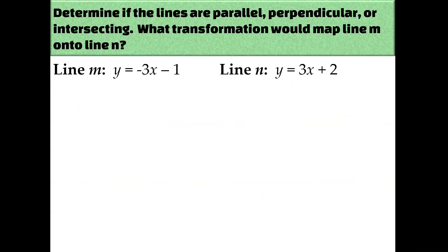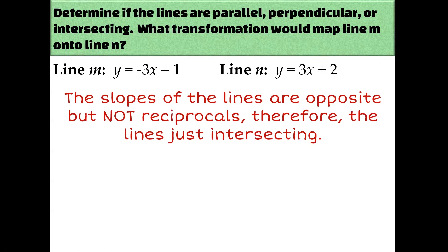Our next example has slopes of negative 3 and positive 3. These two slopes are opposite, but they're not reciprocals. That just means that these two lines are intersecting but not in any special way. So the transformation that would map one onto the other is more complicated than what we'll get into today — neither a translation nor a rotation of 90 degrees would map one onto the other.